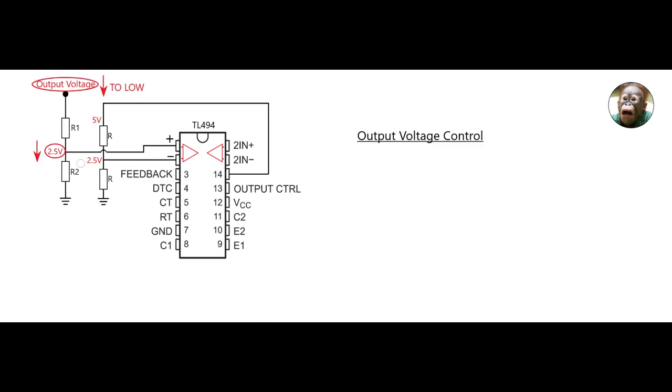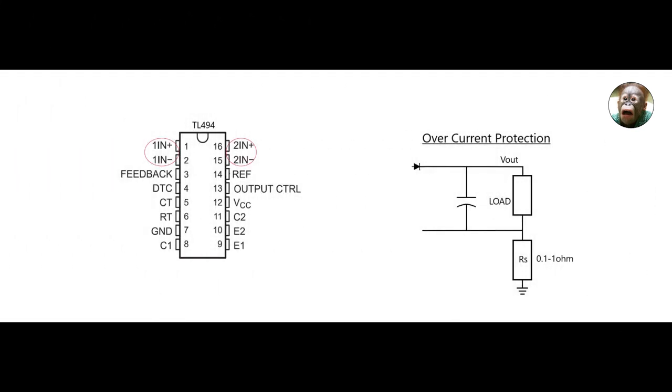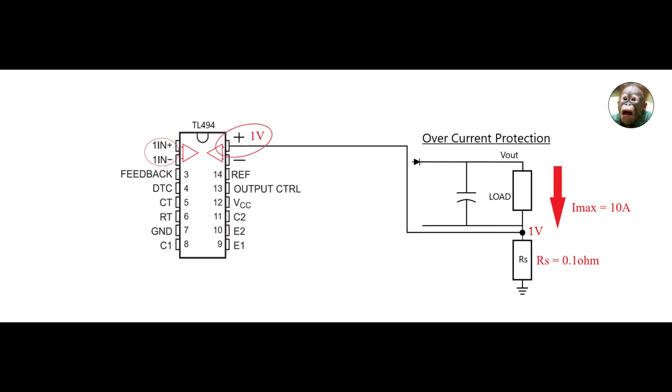To implement over current protection, we measure the total current at the output using a high power, low value resistor called a sense resistor RS. This resistor will develop a voltage across it proportional to the amount of current passing through it. For example, if our maximum current is 10 amps and our sense resistor is 0.1 ohms, then we will have 1 volt across this resistor at the maximum current. Then we take that voltage and connect it to the positive pin of one of the error amplifiers.